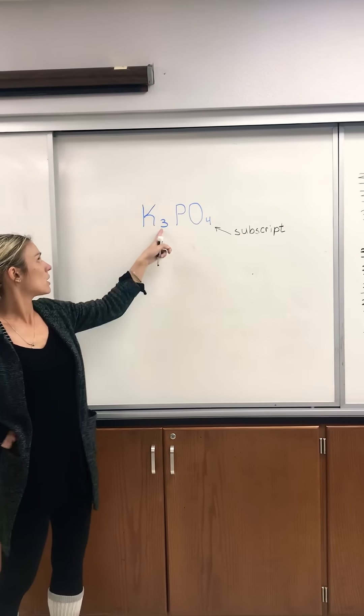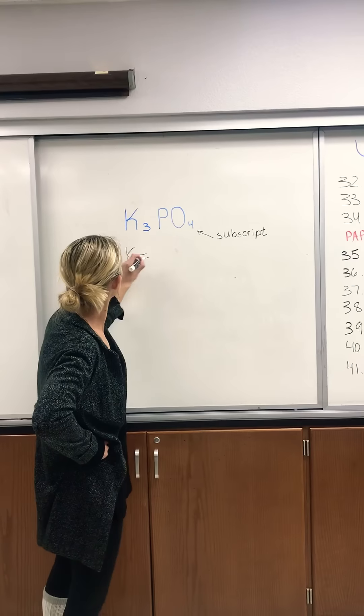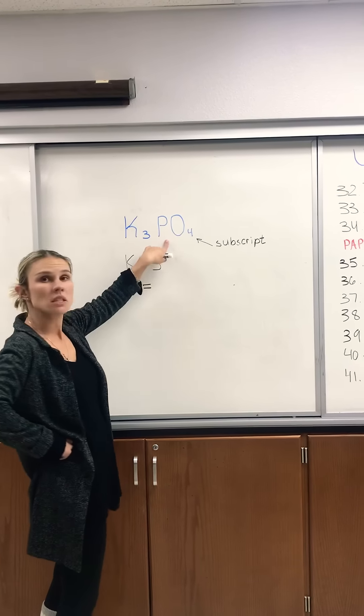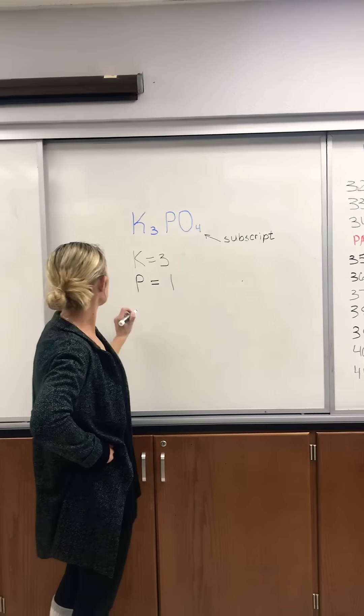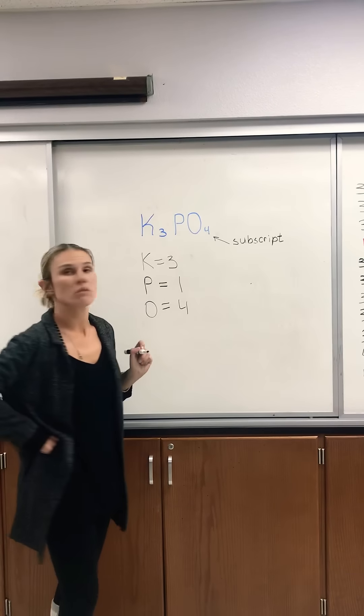Subscripts only belong to the element they are next to. So if I want to count this, I have K which is potassium. I have three of those. The next atom is phosphorus. P doesn't have anything, it means it has one. And oxygen, since I have a subscript of four, I have four oxygens.